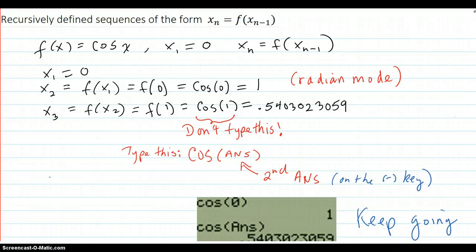This video is about recursively defined sequences of the form x_n equals f(x_{n-1}). First, we have this example where f(x) is cosine x, and your first value is given to be 0.